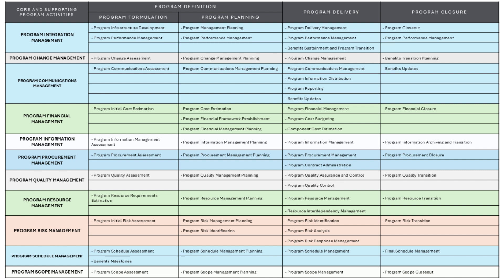Program procurement management ensures that goods and services required for the program are acquired efficiently and in line with program objectives. Program procurement assessment evaluates the procurement needs of the program and identifies suppliers and services required. Program procurement management planning creates a detailed plan for how procurement activities will be managed, including contracts and supplier relationships. In the delivery phase, procurement activities are managed and contracts are administered to ensure compliance and successful delivery. At the end of the program, procurement contracts are closed and any outstanding procurement activities are finalized.